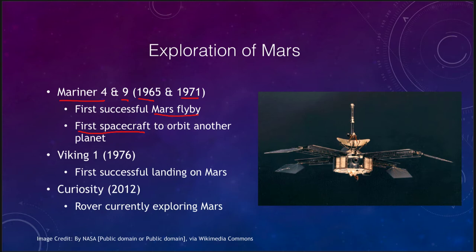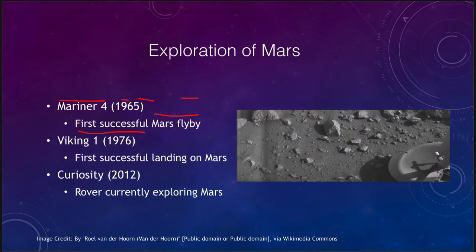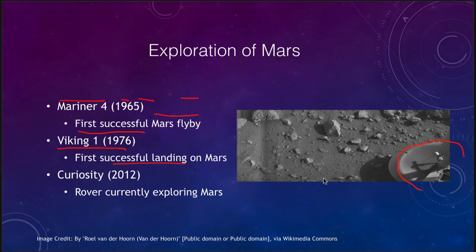A little later in the 1970s we had the Viking craft. The Viking 1 craft was the first successful landing on Mars. You can see part of one of the feet of the craft as it landed, and some of the Martian rocks close to where it landed. The Viking lander drilled into Mars looking for samples and trying to test those samples for any signs of life.